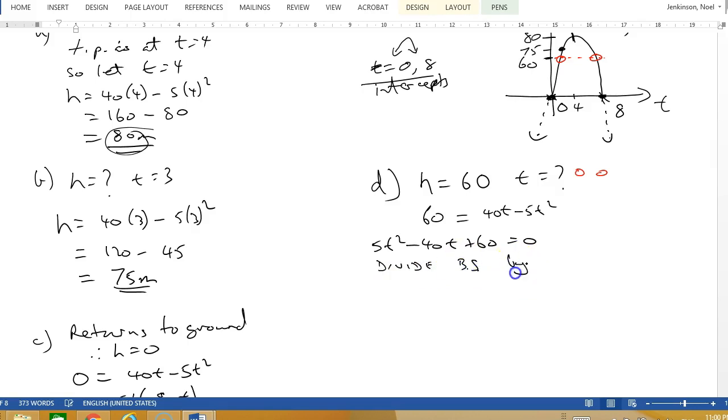I can actually divide both sides by 5. Dividing both sides by 5 gives me t² minus 8t plus 12 equals 0.